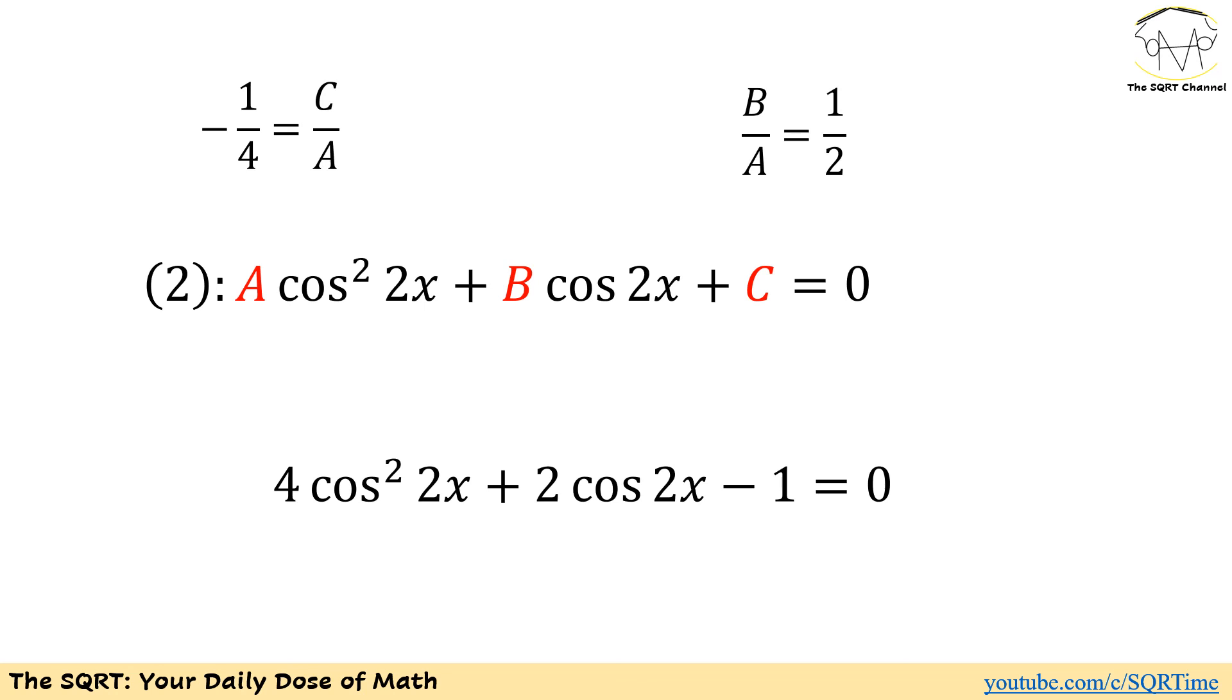We need to construct an equation that satisfies these two things. If we want to do this one possible approach is to use 4 for A, 2 for B, and negative 1 for C. So we can write the equation that we were looking for as 4 cosine squared of 2x plus 2 times cosine of 2x minus 1 equals to 0.